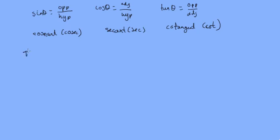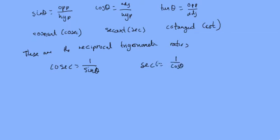These are the reciprocal trigonometric ratios. So, cosec is the reciprocal of sine theta, sec is the reciprocal of cos theta, and cot theta is the reciprocal of tan theta, which means it's also equal to cos theta over sine theta.